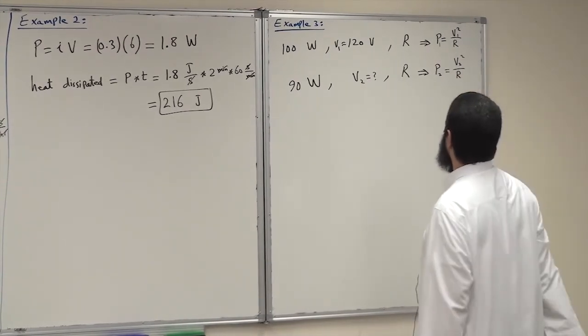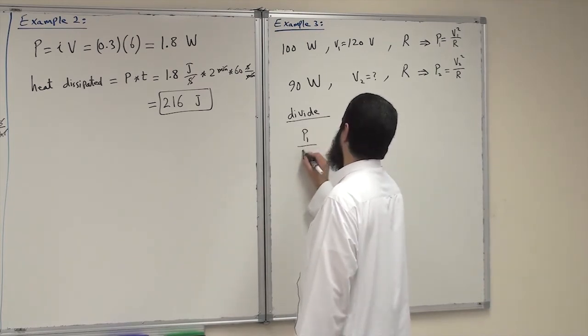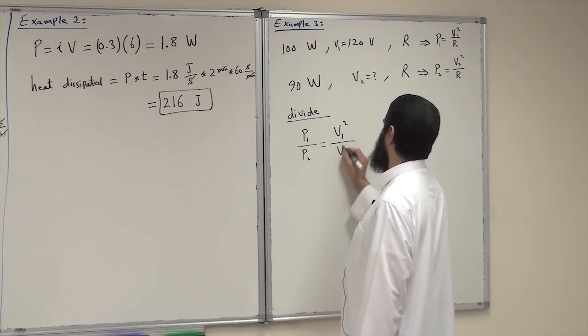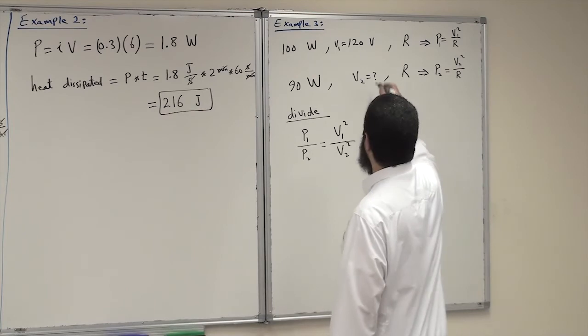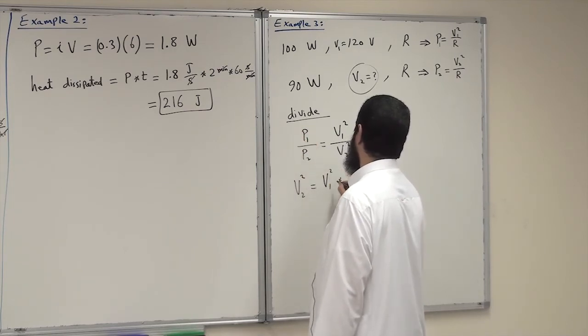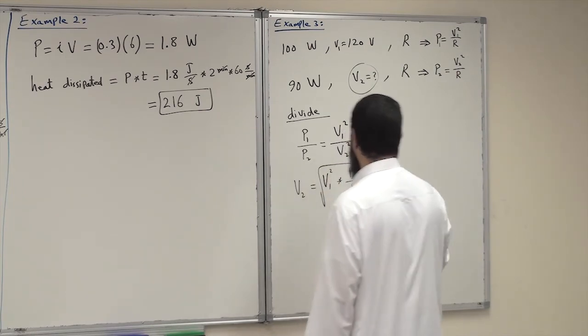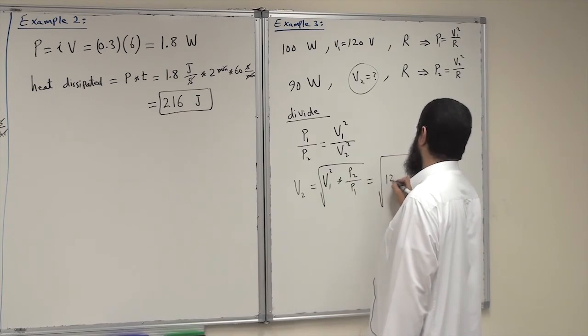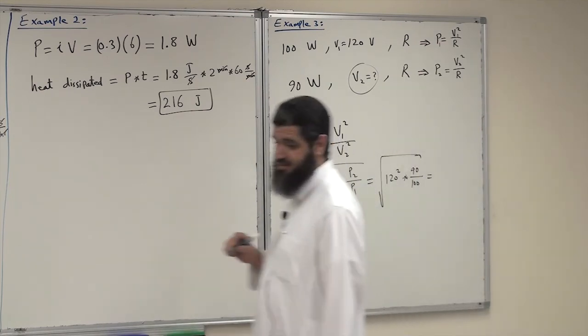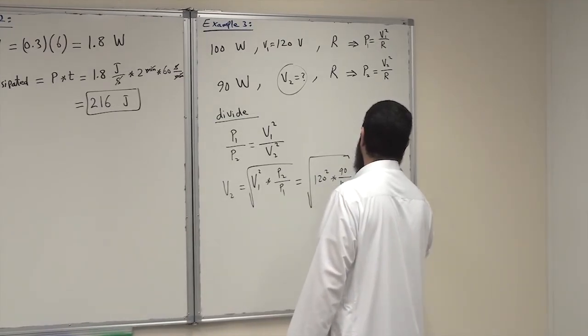Just by dividing the two, we will get P1 divided by P2. R will cancel because it is the same in both cases, and we are left with V1 squared divided by V2 squared. V2 is unknown, so V2 squared equals V1 squared multiplied by P2 divided by P1. To find V2, you need to take the square root. So this will be the square root of 120 squared multiplied by 90 divided by 100 watts. If you do the calculation correctly, you will get V2 to be 114 volts.